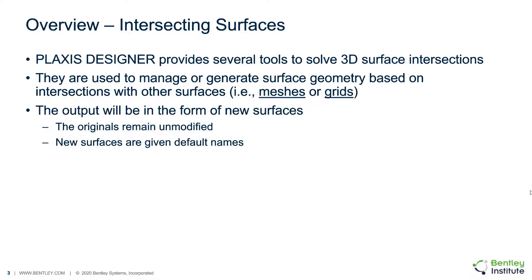Plexus Designer provides a number of different tools to intersect 3D surfaces. These surfaces could be represented as either a triangulated mesh or quadrilateral base grids. Once operations are performed on one or more surfaces, the resulting surface will be a new surface. The original surface will always remain unmodified so that the historical record of surface operations is maintained.